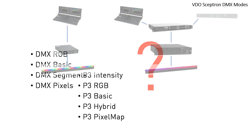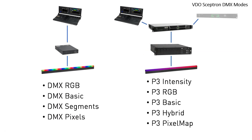The first thing to determine is whether you will be using the fixtures directly on DMX from a lighting desk, as shown on the left hand side, or whether you will be using the fixtures with a P3 system controller, as shown on the right hand side. In this application you can connect DMX from a lighting desk and/or video from a media server. If you control the fixtures directly with DMX, use one of the modes starting with DMX. If you use the fixture with a P3 system controller, use one of the modes starting with P3.